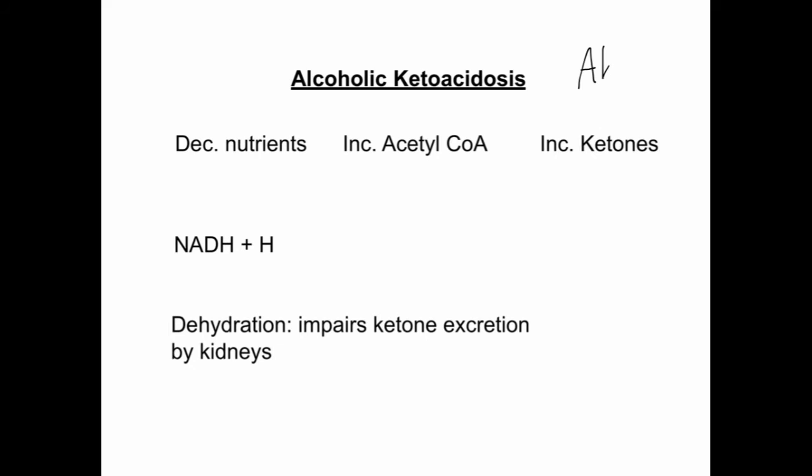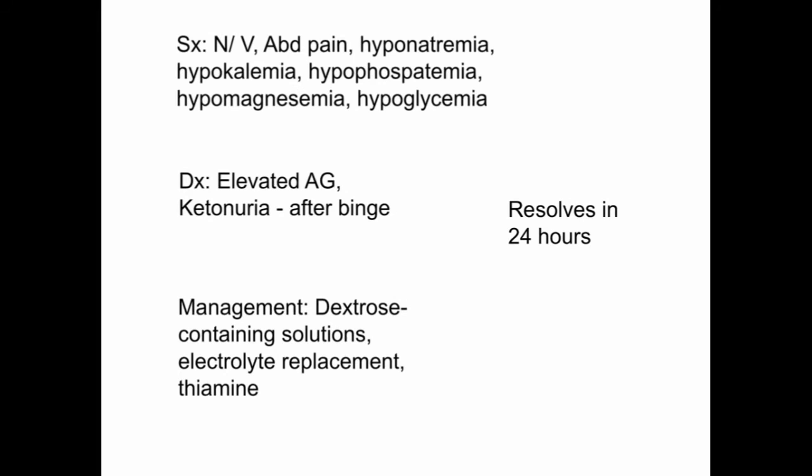Alcoholic ketoacidosis, or AKA, is a complication of alcoholism occurring in chronic alcoholics appearing one to three days after heavy binge drinking. There are three proposed mechanisms: one, decreased nutrient intake leads to an increase in acetyl-CoA, which leads to an increase in ketones; two, hepatic oxidation of ethanol generates NADH, causing an increased concentration of hydrogen ions; and three, dehydration impairs ketone excretion in the urine. The patient usually presents with nausea, vomiting, abdominal pain, hyponatremia, hypokalemia, hypophosphatemia, hypomagnesemia, and hypoglycemia.